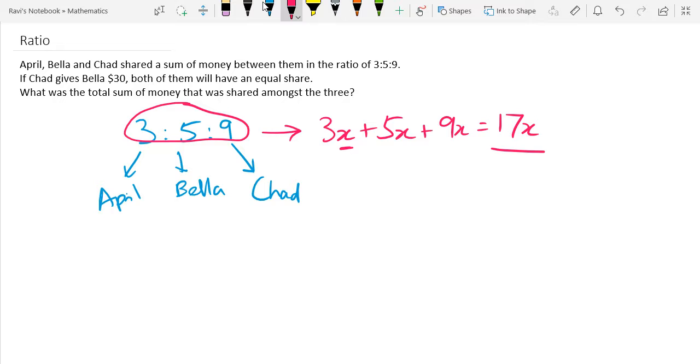And we are given this information that if Chad gives Bella $30, then they both have an equal share. So what is important here is we are trying to come up with an equation that helps us solve for the unknown variable x here. So with this information, the second line that is given, we can come up with the equation.